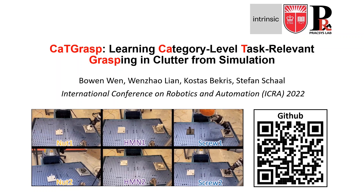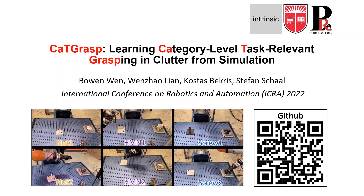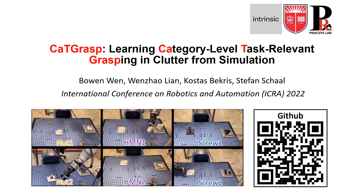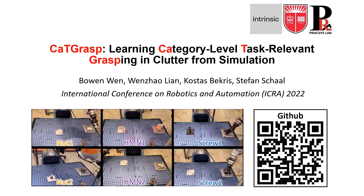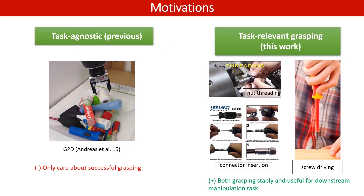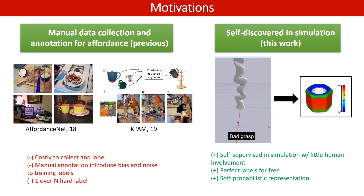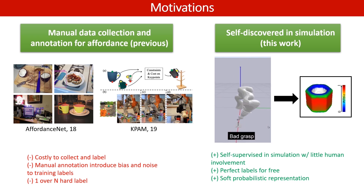Hello everyone, I'm Buwenwen. I'm glad to present our paper, Cat Grasp: Learning Category-Level Task-Relevant Grasping in Clutter from Simulation. In this work, we aim to find grasps that are not only stable, but also the same grasp poses can be directly transported for downstream manipulation tasks. A line of research approached this objective by crowdsourcing large-scale real-world data and manually annotated affordance labels of segmentations or key points, which can be costly.